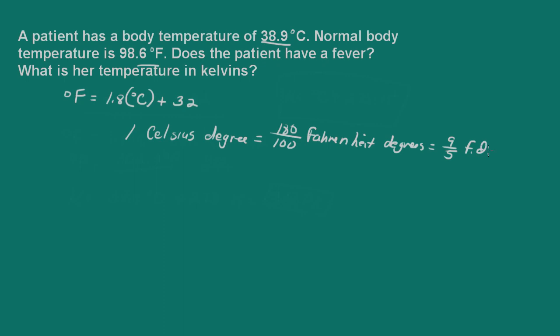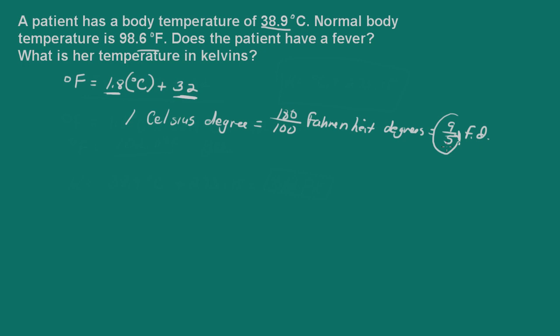So when we're converting from degrees Celsius to Fahrenheit, first we need to change the degree size, and then we also need to adjust for the zero point. Remember, in degrees Fahrenheit, water freezes at 32 degrees. So that's where the 32 comes in. And the 1.8 here is equal to 9 over 5.